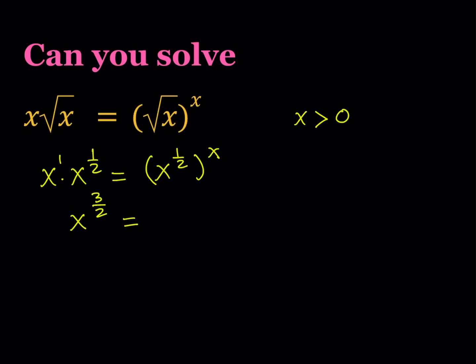And on the right-hand side, we have the power of a power, which can be written as the product of exponents. So we can write this as x to the power x over 2. Okay, great. Now, what is that supposed to mean?